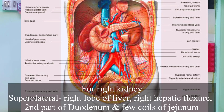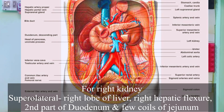Specifically for the right kidney, you will find the liver — the right lobe of the liver at the lateral border — then the right hepatic flexure of the large colon, and the second part of the duodenum.